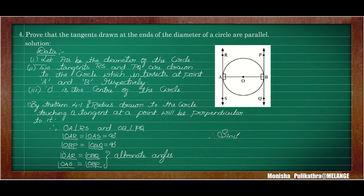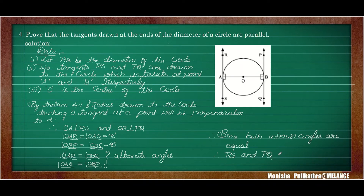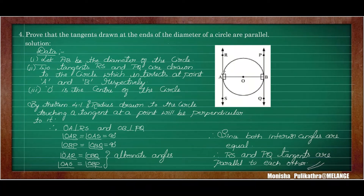Since both interior alternate angles are equal, lines RS and PQ are parallel to each other. Therefore, the tangents RS and PQ are parallel to each other. To summarize: first prove OA perpendicular to RS and OB perpendicular to PQ by the perpendicular theorem, then prove both angles are 90 degrees, then identify the two alternate angles, and conclude RS and PQ are parallel.